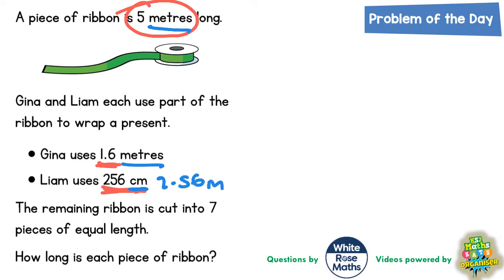We would first add up what we've got so far. We've got Gina cutting off 1.6 metres of ribbon and Liam cutting off 2.56. Notice I've lined the decimal points up and put 2.56 underneath so that the units digits are in the correct columns lined up with one another. If there's an empty space here we can put a 0 in.